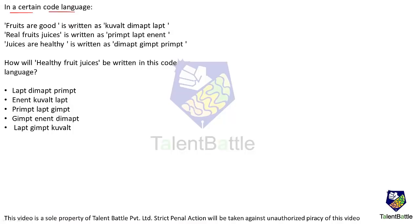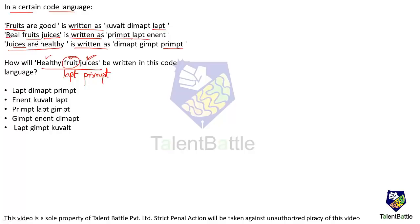Sample Q1 — Coding-Decoding: In a certain code language, 'fruits are good' is written as a code, 'real fruits juices' as another, and 'juices are healthy' as another. To find the code for 'healthy fruit juices': comparing sentences 1 and 2, 'fruits' maps to 'lap'; comparing sentences 2 and 3, 'juices' maps to 'primt'; 'are' is common to sentences 1 and 3, mapping to 'dimap', so 'healthy' must be 'gimt'. Therefore 'healthy fruit juices' is written as 'gimt lap primt'.